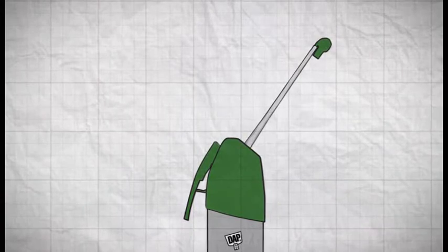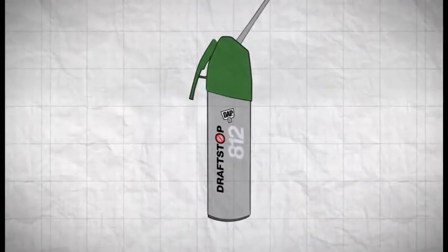Meet DAP DraftStop 812 Polyurethane Window Indoor Foam with the Stop & Store built-in applicator. The latest innovation in the DAP spec line.